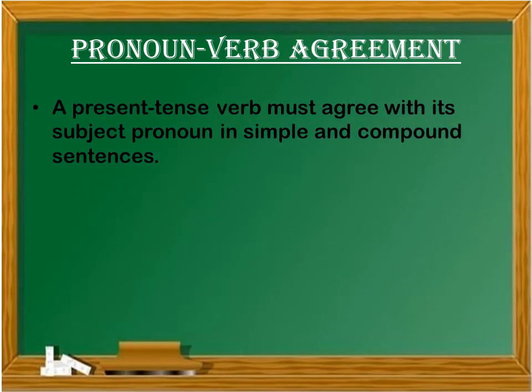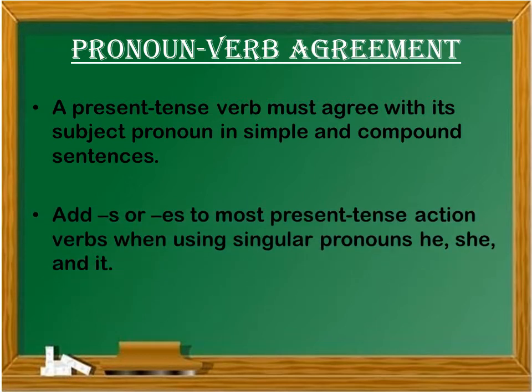A present tense verb must agree with its subject pronoun in simple and compound sentences. Add S or ES to most present tense action verbs when using singular pronouns such as he, she, or it.